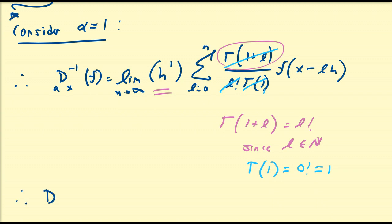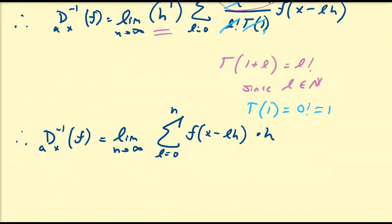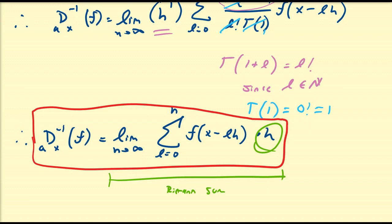So that means the negative first derivative of f with terminal points a and x is just equal to the limit as n goes to infinity of the sum from l equals zero to n of f of x minus l times h, times h. This right-hand side should look familiar — this is practically just a Riemann sum.